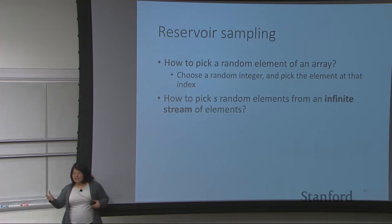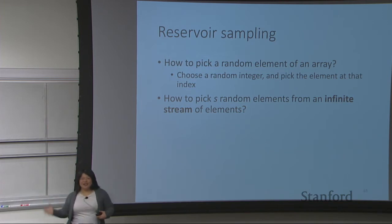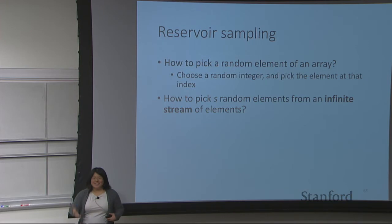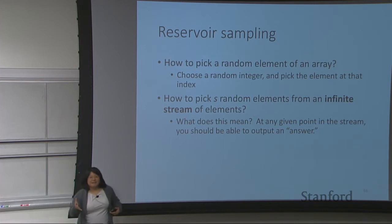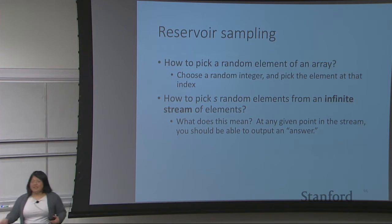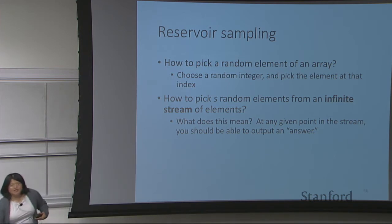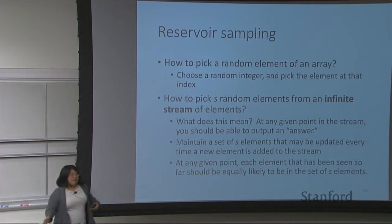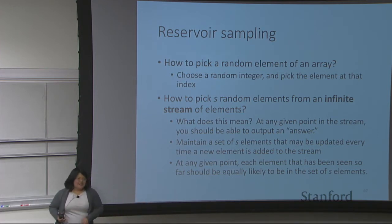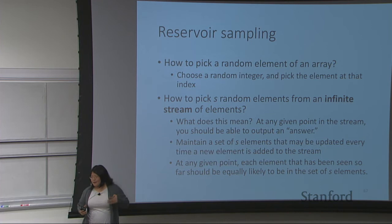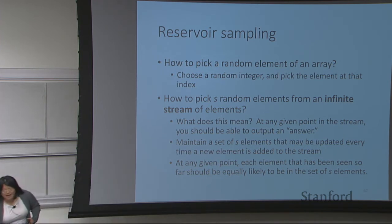How do you pick s random elements from an infinite stream of elements? The first question is: what exactly does this mean? What is the input? What is the output? When do you give the output? The answer is that at any given point in the stream you should be able to output an answer, whether you've seen five elements, 50 elements, or 50 million elements. Specifically, you maintain a set of s elements, and every time a new element is added to the stream you may or may not update the set. This set must guarantee that every element seen so far is equally likely to be in it.